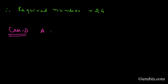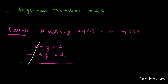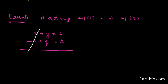For case 2, we add equation number 1 and equation number 3. We have X plus Y equals 6, and minus X plus Y equals 2. Adding these two equations, the X terms cancel, giving 2Y equals 8, so Y equals 4.